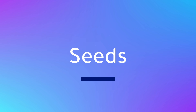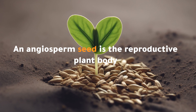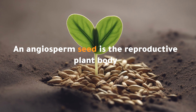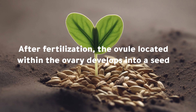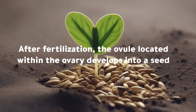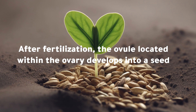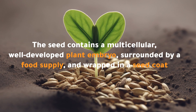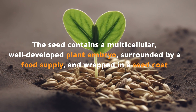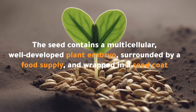An angiosperm seed is the reproductive plant body. After fertilization, the ovule located within the ovary develops into a seed. The seed contains a multicellular, well-developed plant embryo surrounded by a food supply and wrapped in a seed coat.